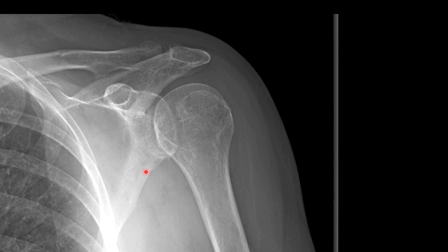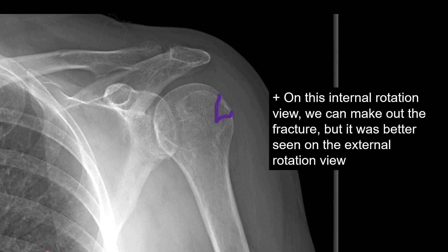Here's that same patient, this time in internal rotation. If you follow the contours of the humeral head, you can still make out some of these fracture lines, but it's not as easy to see as on the external rotation view. I've gone ahead and highlighted those fracture lines for you to show that it's more difficult to make out.